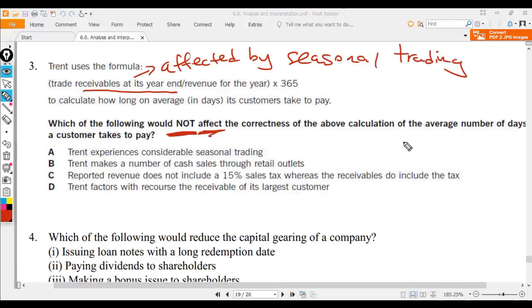So this one is affected by seasonal trading. If you set your year-end at high season you have a lot of receivable. If you set your year-end at low season then you have less receivable, so it will affect the correctness.